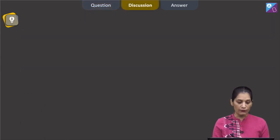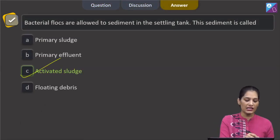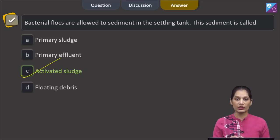The correct option for the given question is option C which says activated sludge. Let's move to the next question.